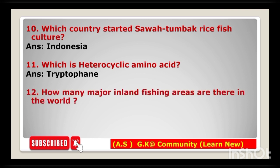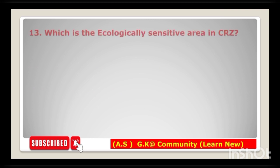Next question: how many major inland fishing areas are there in the world? The answer is eight — there are eight major inland fishing areas in the world. Next question: which is the ecologically sensitive area in CRZ? The answer is CRZ-1.